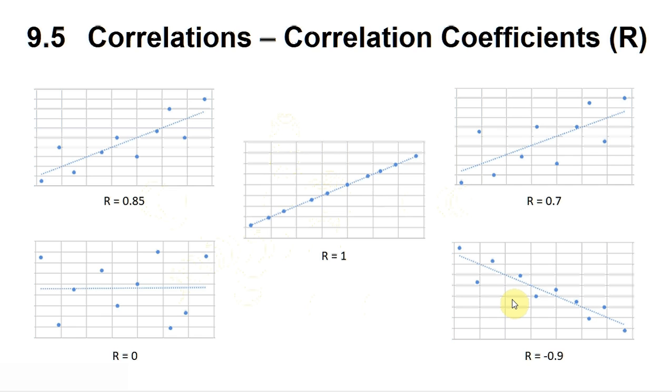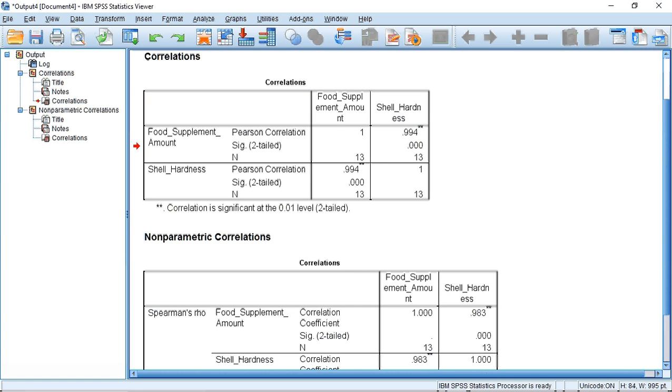A minus correlation coefficient suggests that as x increases y decreases so the slope is in the opposite direction to a positive r value. Check out the book for more information.